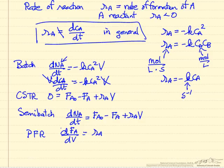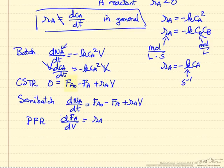For a continuous stirred tank reactor, there's a molar flow rate into the reactor, a molar flow rate out, and again a rate of reaction term.